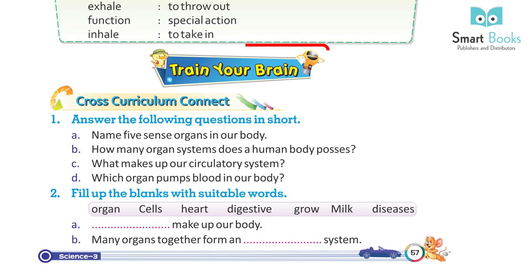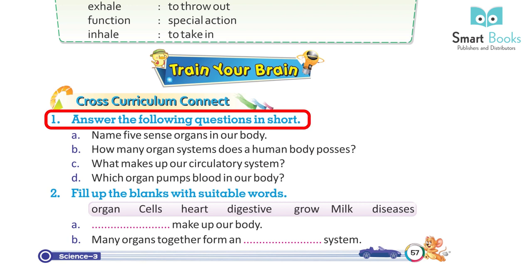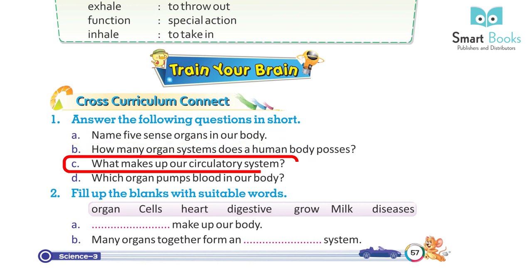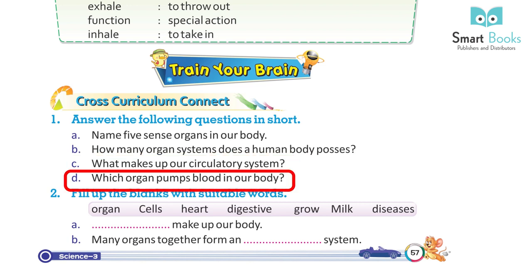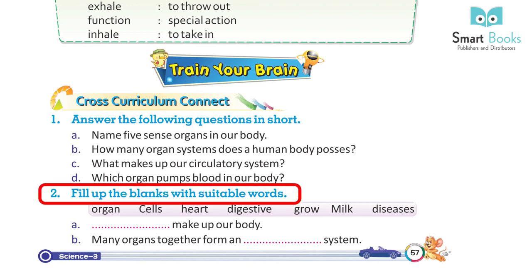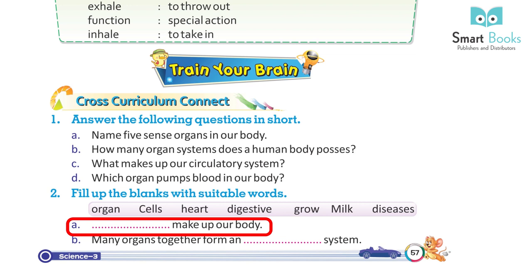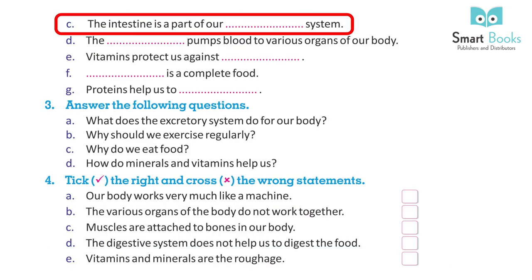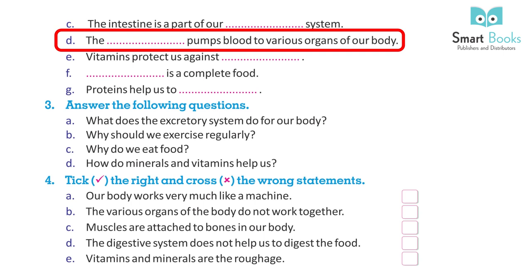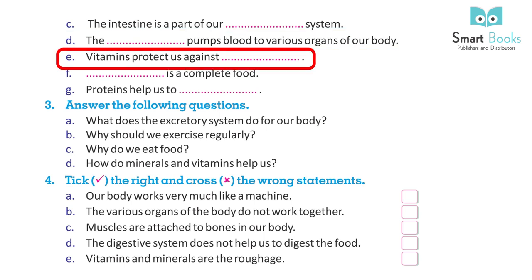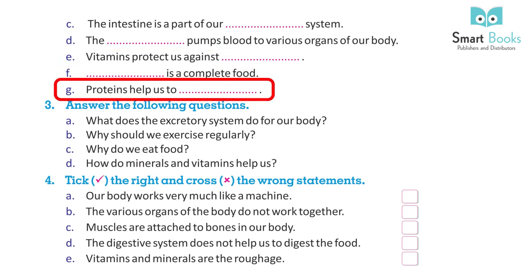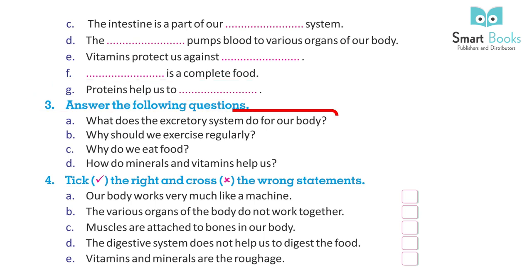Train your brain – cross curriculum connect. Answer in short: a) Name five sense organs. b) How many organ systems does a human body possess? c) What makes up our circulatory system? d) Which organ pumps blood in our body? Fill in the blanks: a) ___ makes up our body. b) Many organs together form an ___ system. c) The intestine is a part of our ___ system. d) The ___ pumps blood to various organs. e) Vitamins protect us against ___. f) ___ is a complete food. g) Protein helps us to ___.